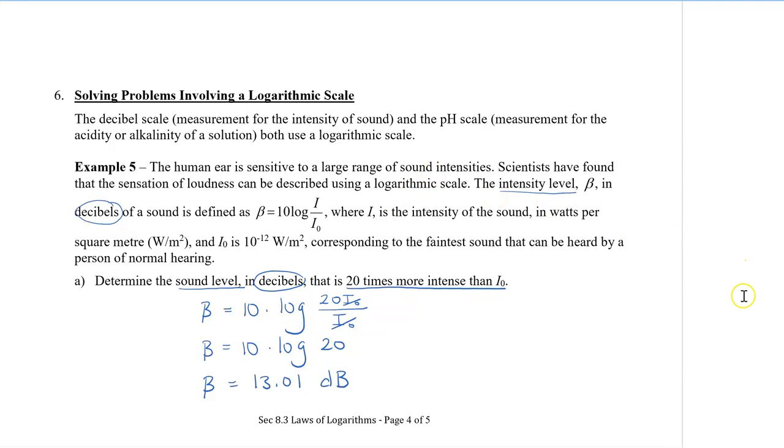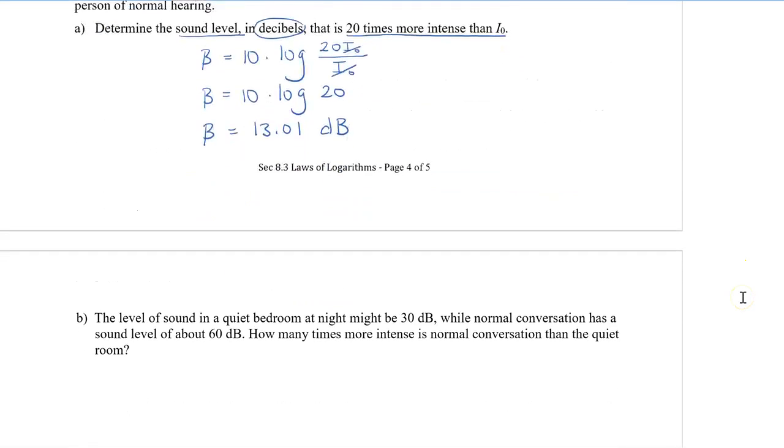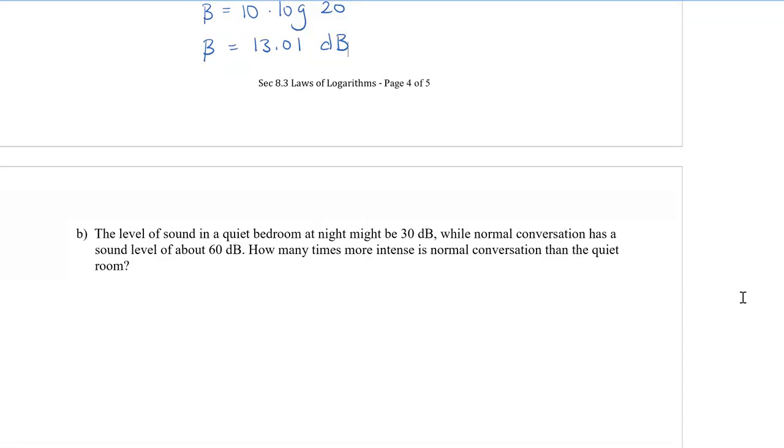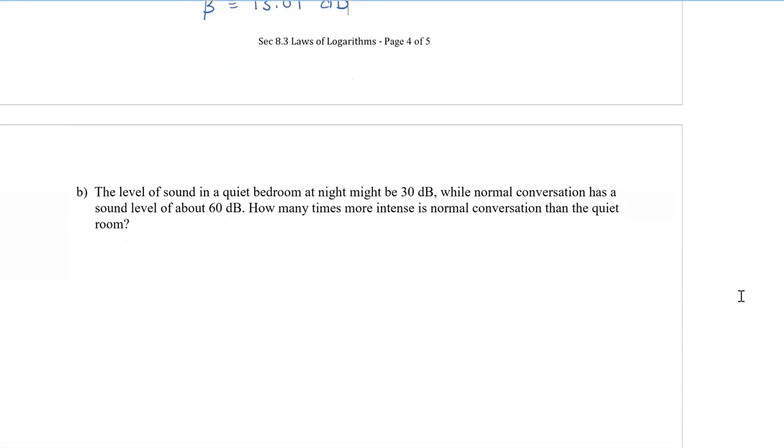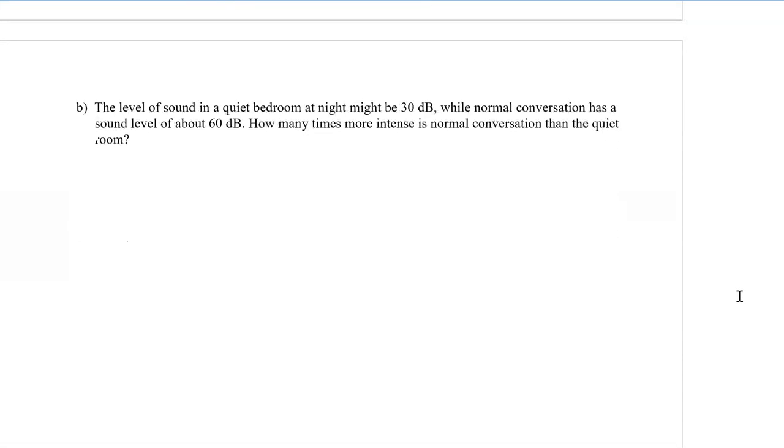Alright, let's take a look at one more example that applies this. So now we have the level of sound in a quiet bedroom at night is about 30 decibels, while normal conversation has a sound level of about 60 decibels. So the question is, how many times more intense is normal conversation than the quiet room?